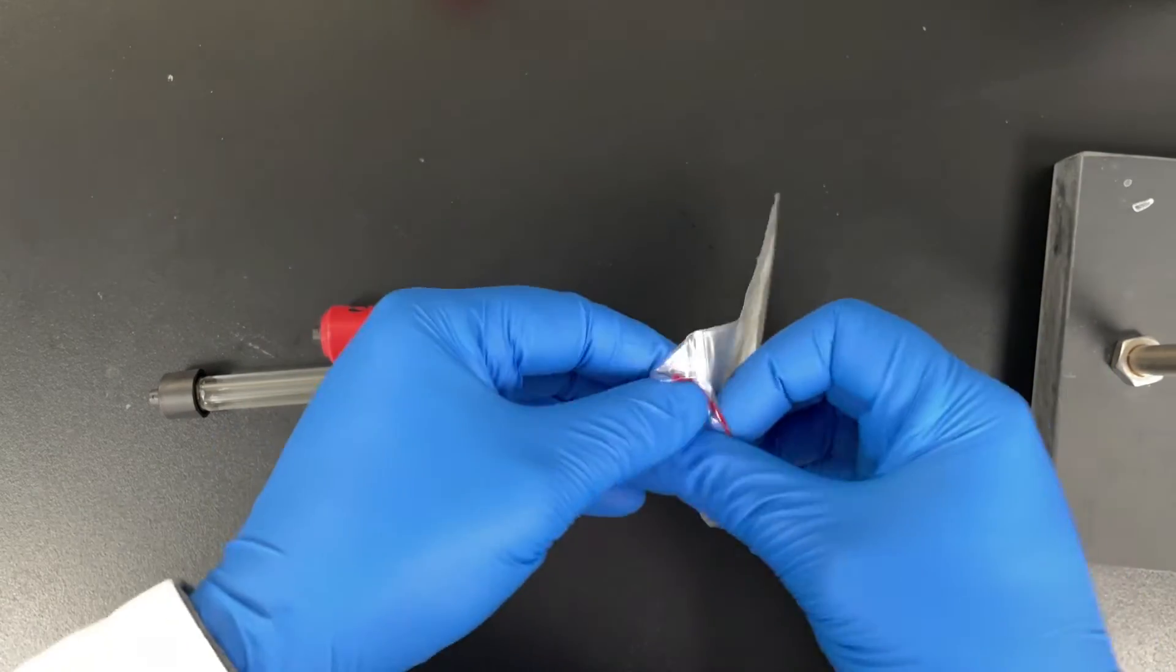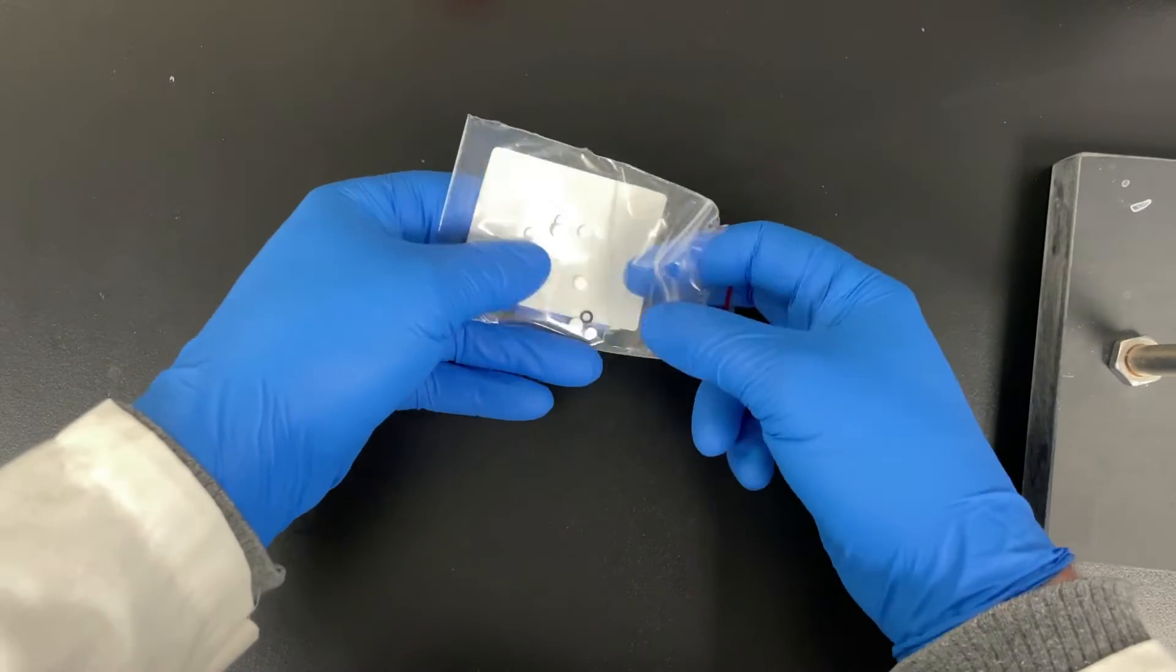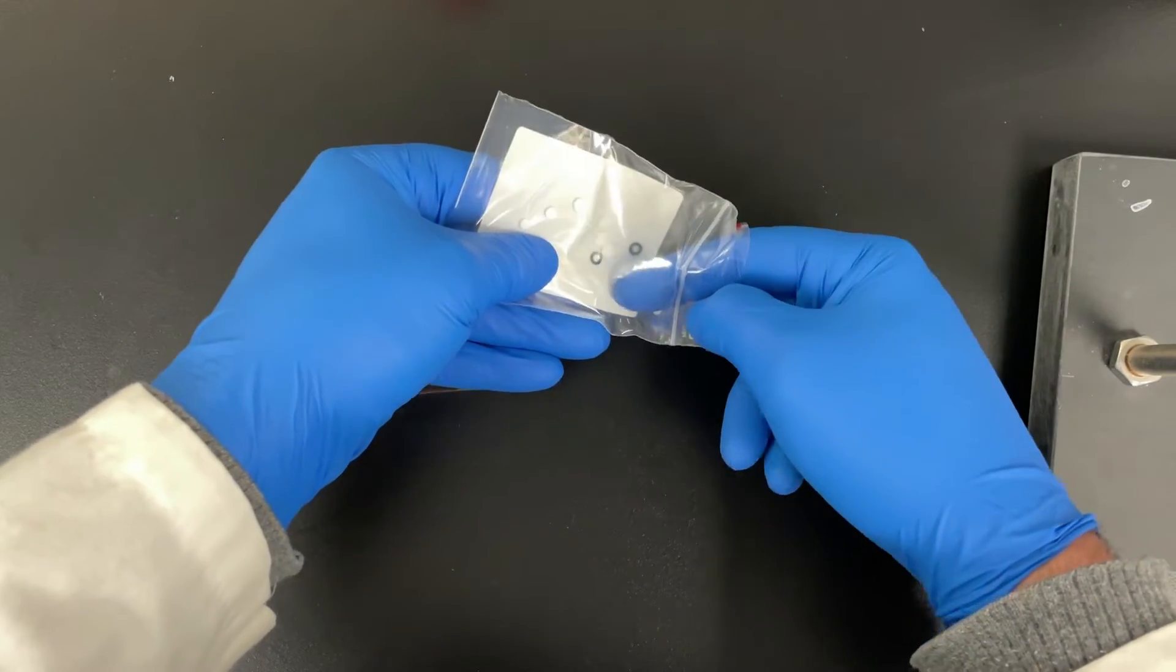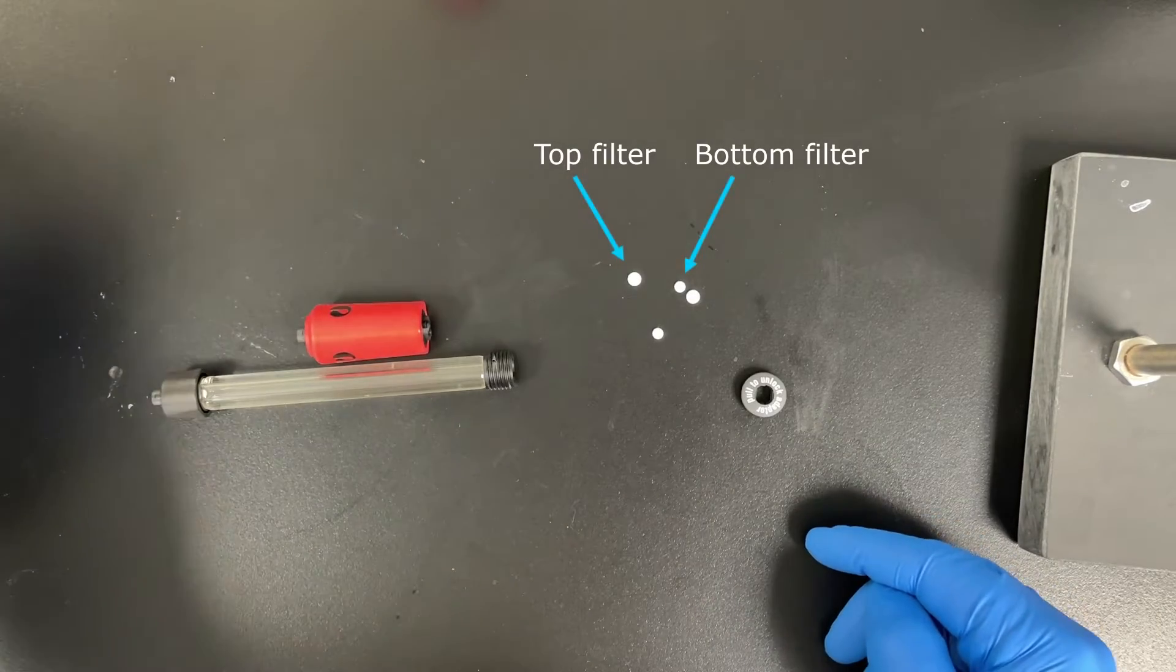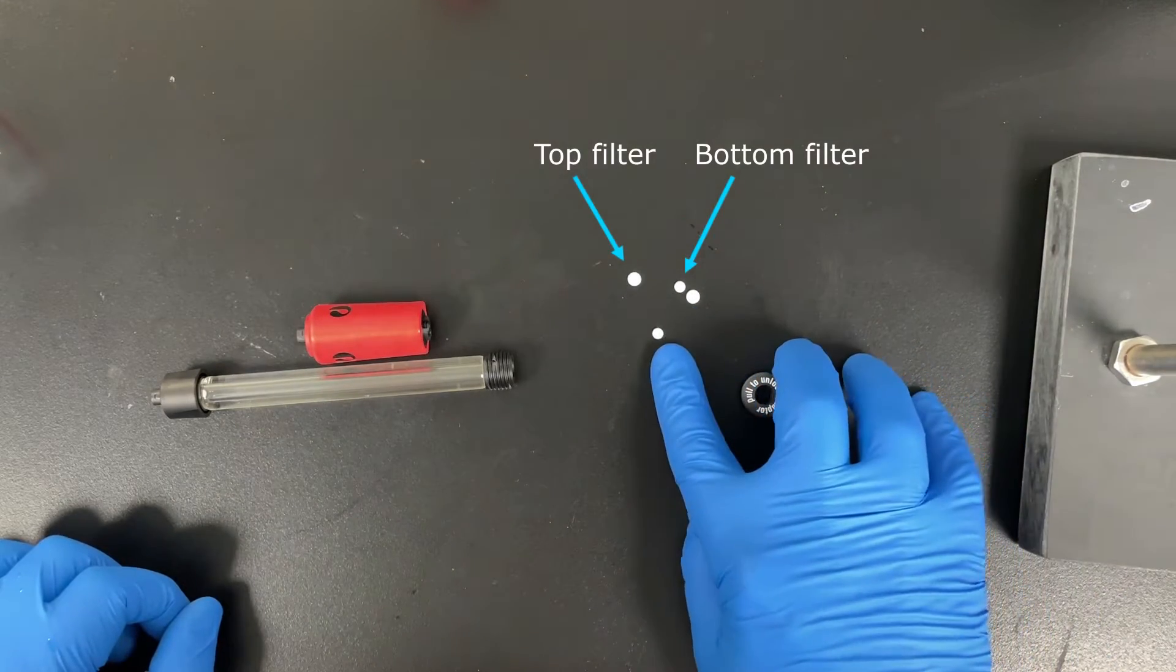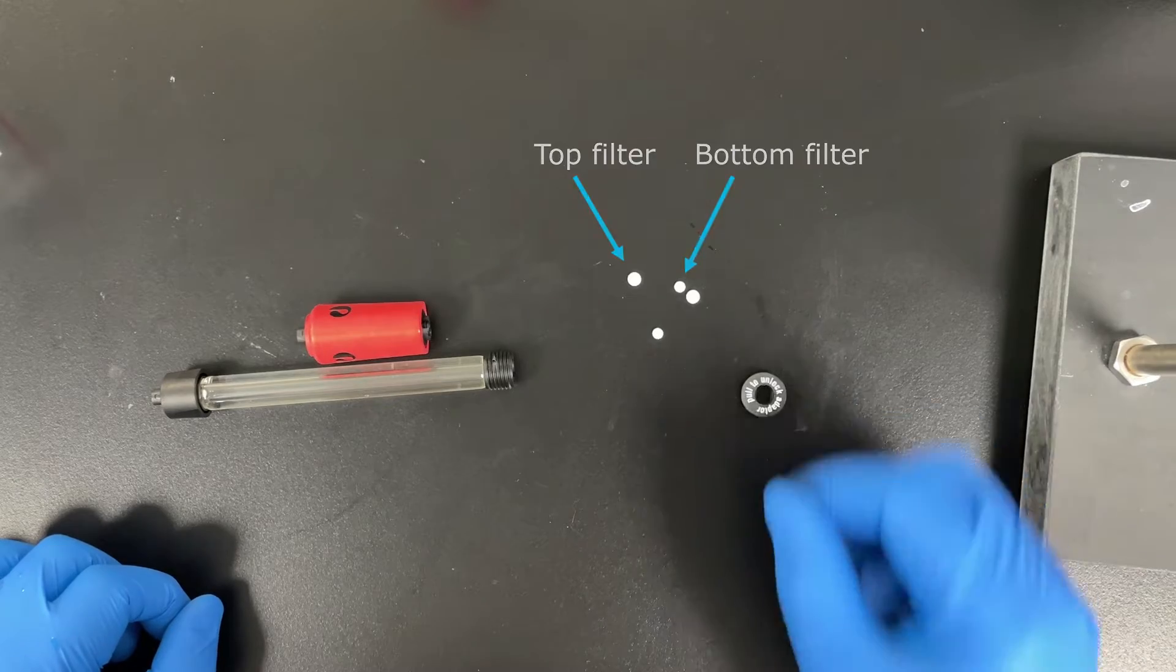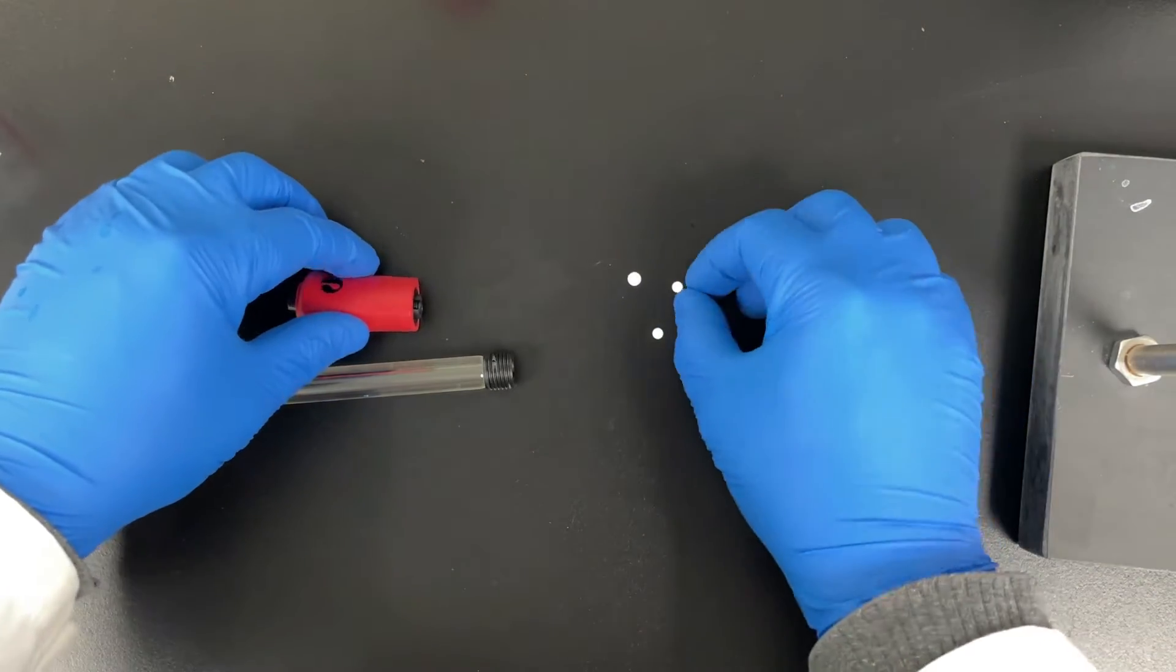So there are two sizes of filter that hold the resin in place and you can see it once you line them both up together. The larger filters fit on the top adapter and the smaller filters go on the bottom adapter. These things are pretty tiny.